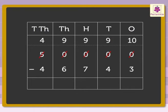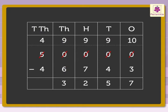Now, subtract the ones: ten minus three is equal to seven. Subtract the tens: nine minus four is equal to five. Subtract the hundreds: nine minus seven is equal to two. Subtract the thousands: nine minus six is equal to three. Lastly, subtract the ten thousands: four minus four is equal to zero.